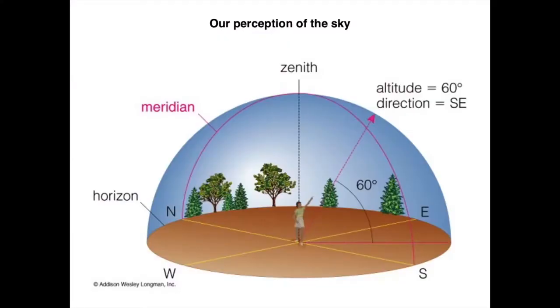Hello astro people. Last class we talked about the celestial sphere and the equatorial coordinate system. Let's continue the class and look at other coordinate systems defined on the celestial sphere. We can define a coordinate system that depends on the local position of the observer. In the equatorial system, the position of a star is defined by right ascension and declination.